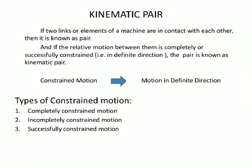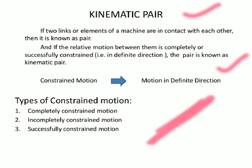Now we will study kinematic pairs. A kinematic pair is formed when two elements are combined. If the relative motion between them is completely or successfully constrained — that is, in a definite direction — then the pair is known as a kinematic pair.